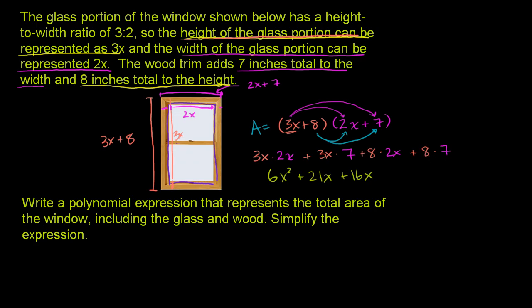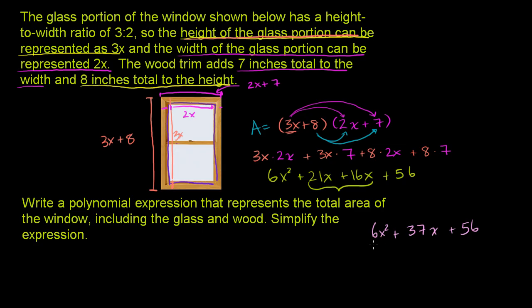Now we simplify. 3x times 2x is 6x squared. Plus 21x. Plus 16x. Plus 56. We combine the two middle terms: 21x plus 16x is 37x. So the final simplified polynomial expression is 6x squared plus 37x plus 56.